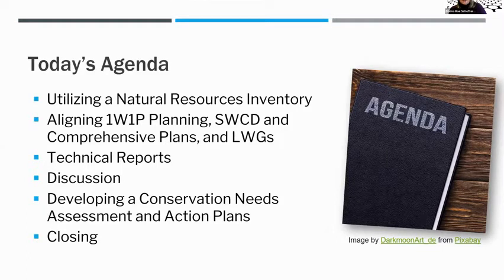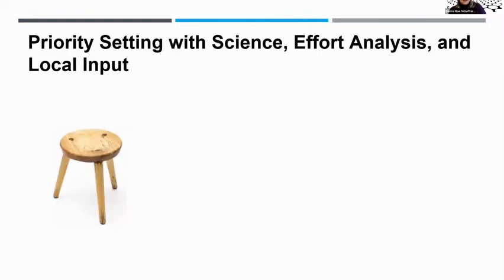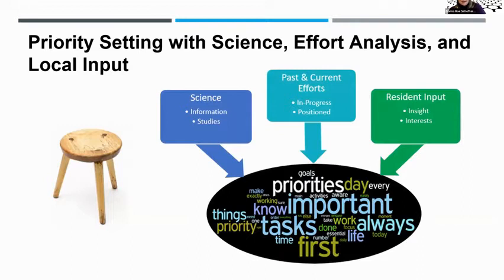I wanted to give a broad opening to put today in context for the series. The three-legged stool — there are three feeders into this idea of what the priorities are. We're today looking at the blue and the teal — looking at the science, the information, the studies, the plans — but also aware of what you have in progress, what you're positioned to do, or maybe goals you've accomplished. Those are the two aspects we're dealing with in this webinar series. Number three, next week, is going to be more on the human side — getting interests — although we touch on that slightly today.